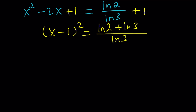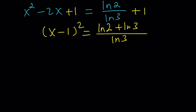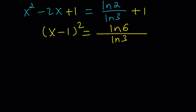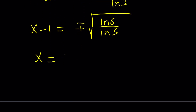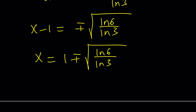On the right-hand side it can actually be simplified, because ln A plus ln B can be written as ln AB — if A and B are both positive, we can combine or condense them. So this gives us ln 2 times 3, which is ln 6. Now I have a perfect square and I can square root both sides. That's going to give me, with a plus-minus sign, the square root of ln 6 over ln 3, which equals x minus 1. After adding 1 to both sides, you get x equals 1 plus-minus the square root of ln 6 over ln 3.